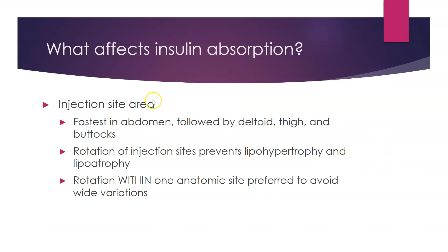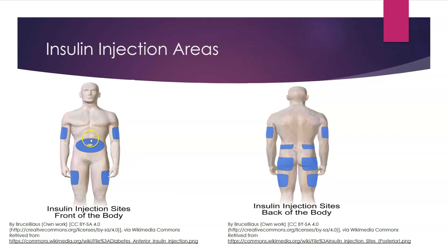What affects insulin absorption? The site matters — the abdomen is probably one of the fastest sites, then deltoids and thigh. We do want to rotate injection sites because otherwise you can get lipohypertrophy, meaning those cells kind of expand, or they can get some atrophy as well. We like to rotate within one anatomic site — going around the belly button for the abdomen or up and down the leg — so absorption remains more constant rather than flipping from deltoid to thigh to glutes to stomach.